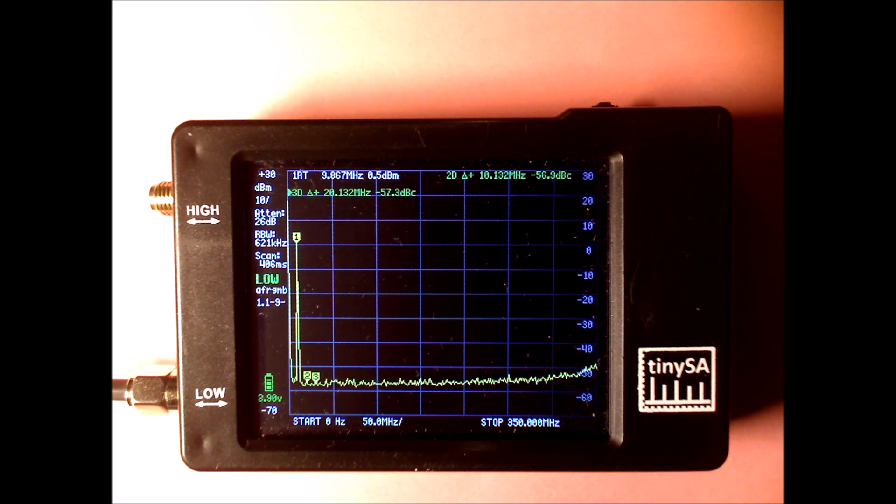And we see that the input attenuator is toggling between 25 and 26 dB to keep the level at the input of the mixer at minus 25 dB. And everything looks okay. No harmonics appear. Nothing is going wrong. The TinySA seems to be very capable to handle this type of input.